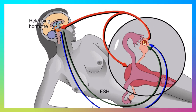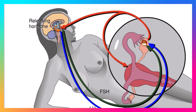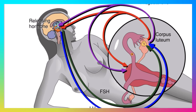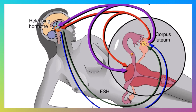To summarize ovulation and the following events: when the follicle is nearly mature, it signals the hypothalamus to trigger ovulation. The ruptured follicle, now called the corpus luteum, prevents additional follicles from developing and signals the uterus to prepare for implantation and development of an embryo.